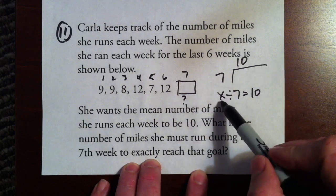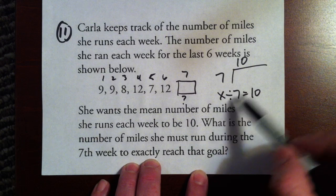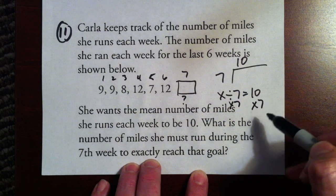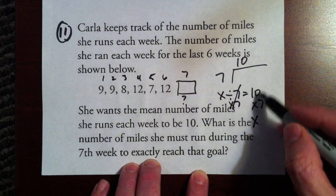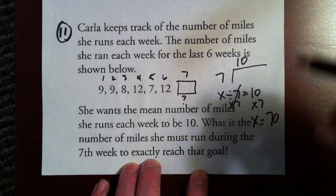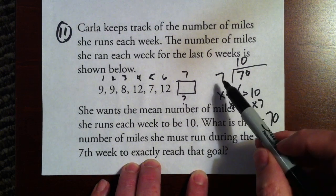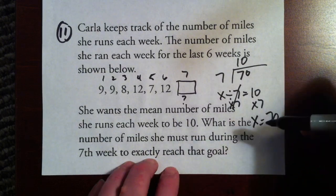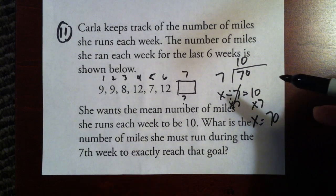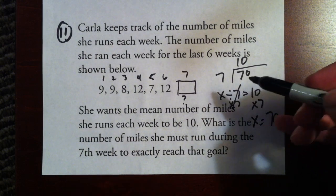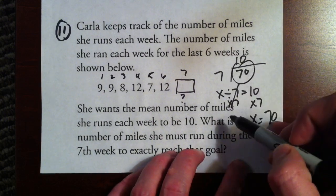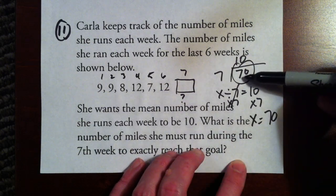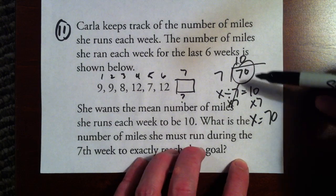And all we would do, we would do the opposite, we would try to get x by itself here. And in order to do that, we would multiply both sides by seven. Those cross out, we're left with x equals 10 times seven, which is 70. Well, that works here, doesn't it? Well, I guess in order to reach the mean, or the average of 10, we have to have a total of 70 miles run. We have to have a total of 70 miles run. We have to ask ourselves, how many do we have already? In order for us to do that, we know we're going to have to have 70 to reach an average mean of 10. We know we've got to have 70.